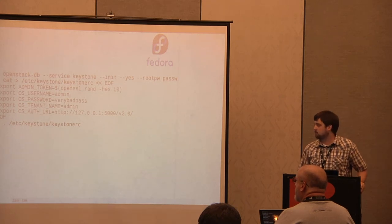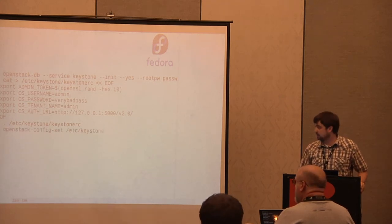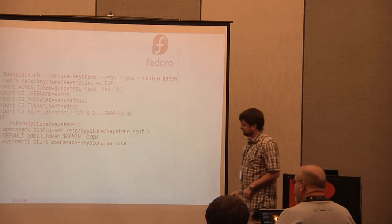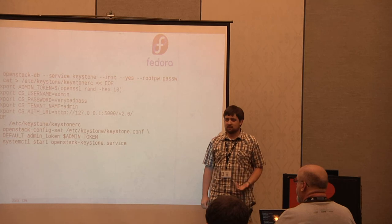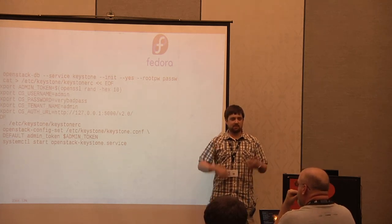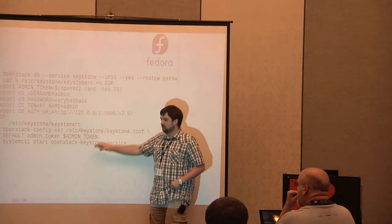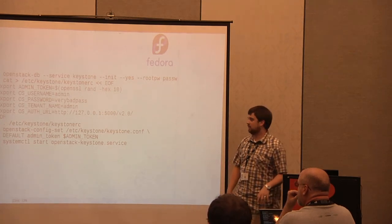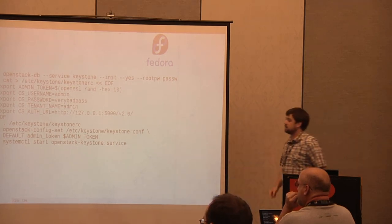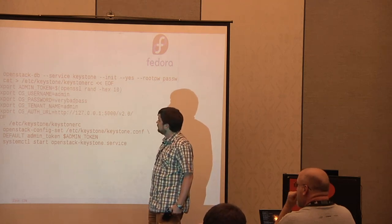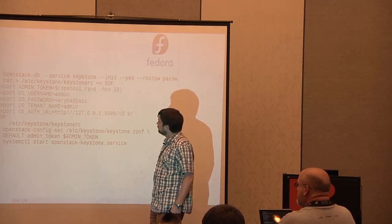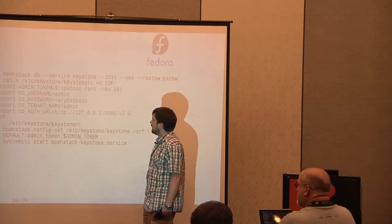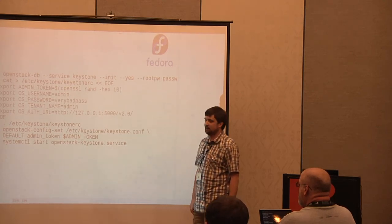I source that file so I have those variables in my environment and start setting some values in the Keystone config. When you first start Keystone, it has no users — so you can't authenticate as a user to create users. That's what the admin token is about: you put an admin token in the configuration, and the very first time you need to create that first user (probably an administrator), you use this admin token to talk to Keystone. Question about whether the password is hashed: it's plain text in the environment. This isn't the only way to do it — it's just quick and easy for testing on my laptop.